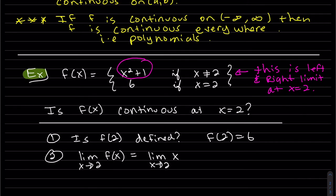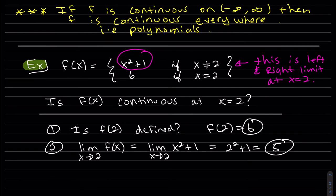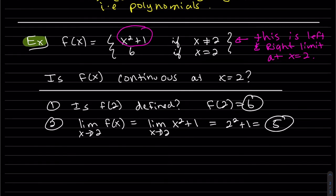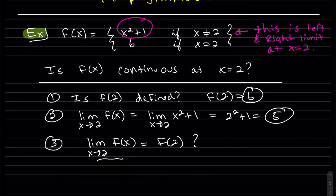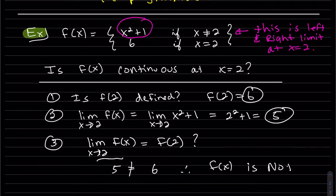The left and right limit at x equals 2 is just x approaches 2 of x squared plus 1. Since that's a polynomial, we just plug it in. So it's defined at 2. But the limit: on the left side we get 5, and on the right side we get 6, and those are not equal to each other. So therefore, it is not continuous at 2.